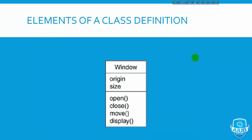These are the elements of a class definition. Take the Window class as an example: the window is the class, with attributes origin and size. The object has operations: open, close, move, display — these are the methods of operation.